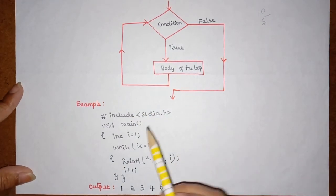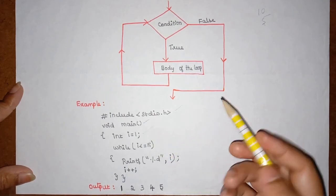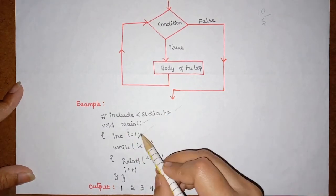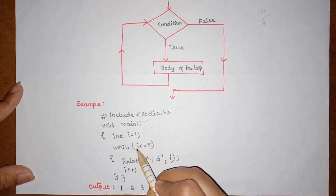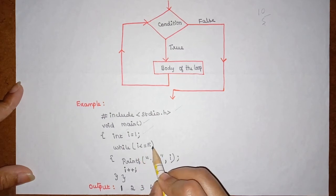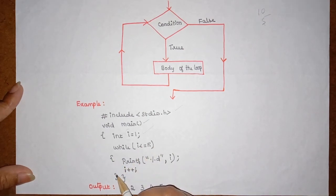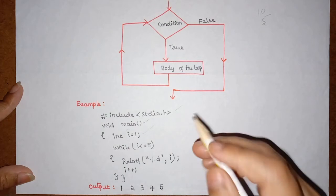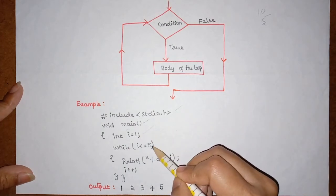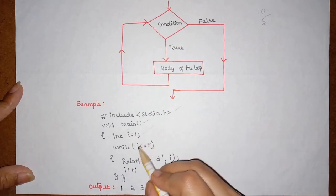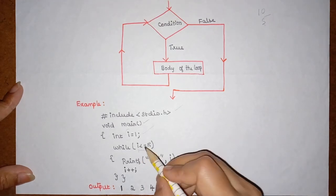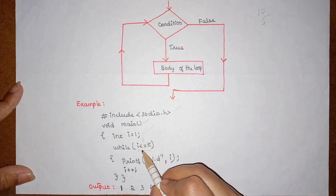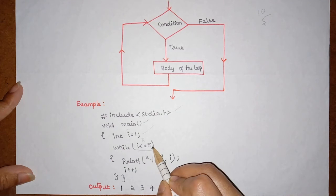This is the example for the while loop. Starting with the header file, then the main function — inside main, we have a declaration where we initialize the value of i. After that, we have a while loop where we check the condition: whether i is less than or equal to 5. If the condition is true, the block executes; otherwise, control moves to the next statement. This program prints values from 1 to 5.